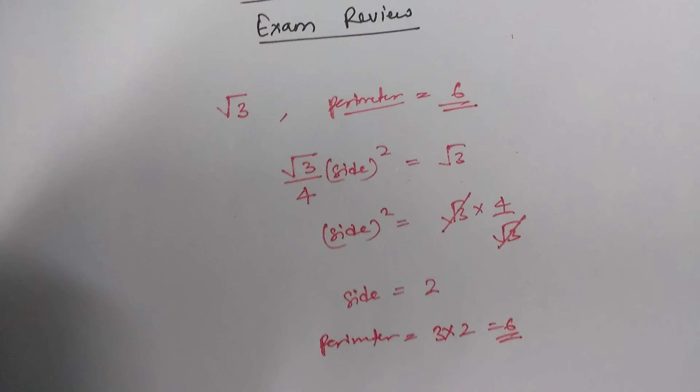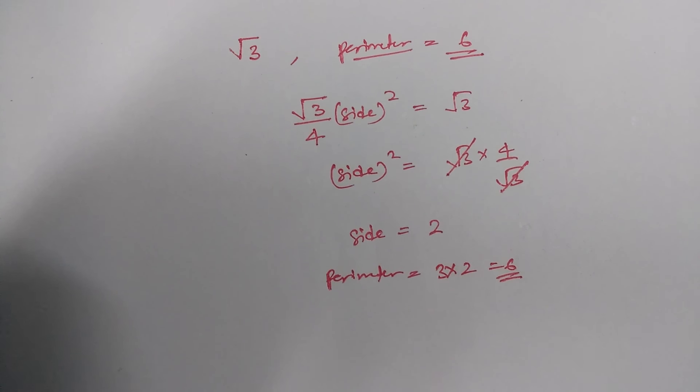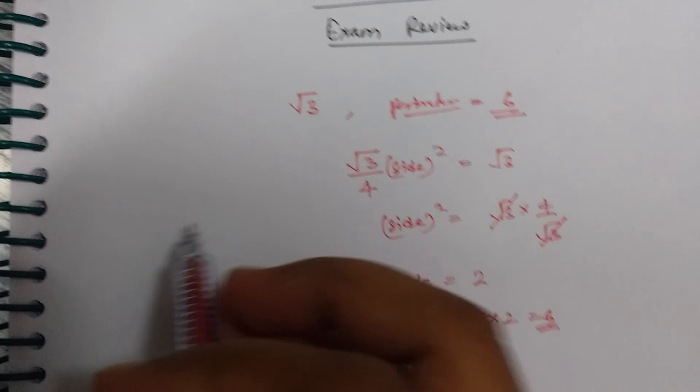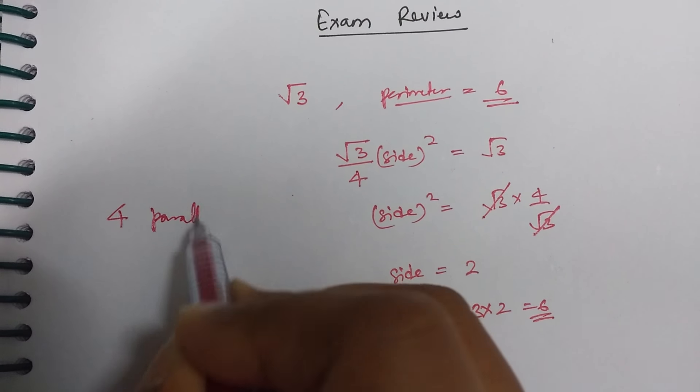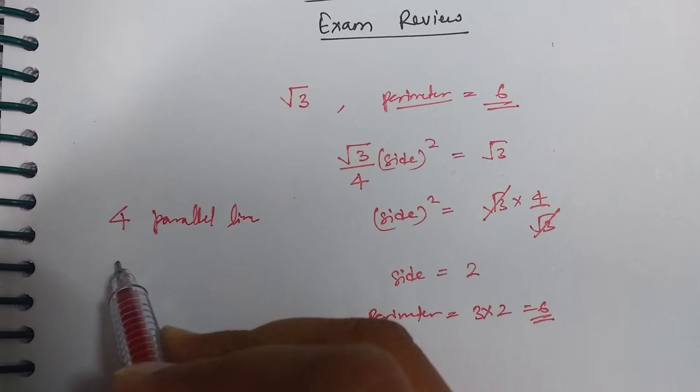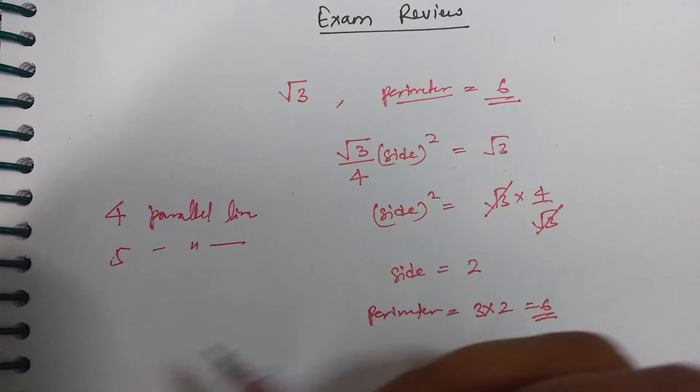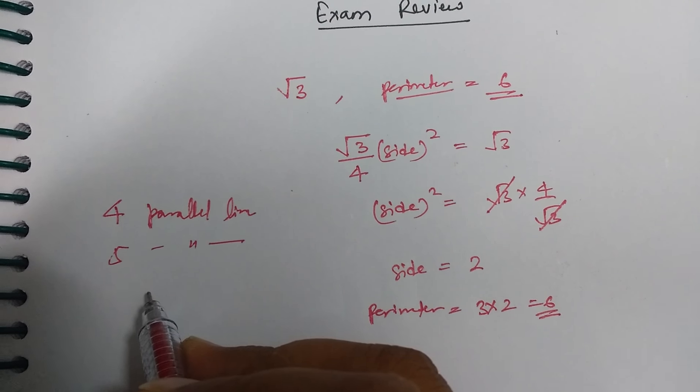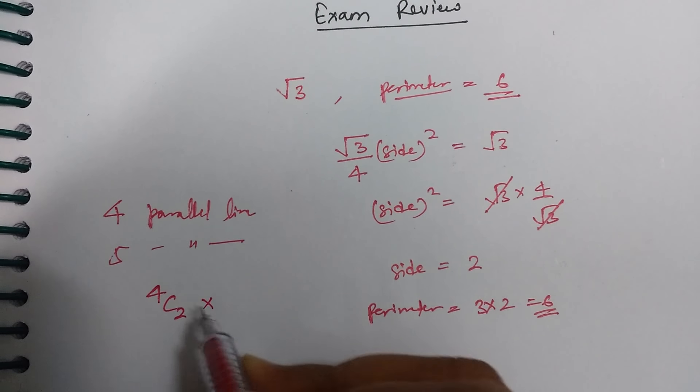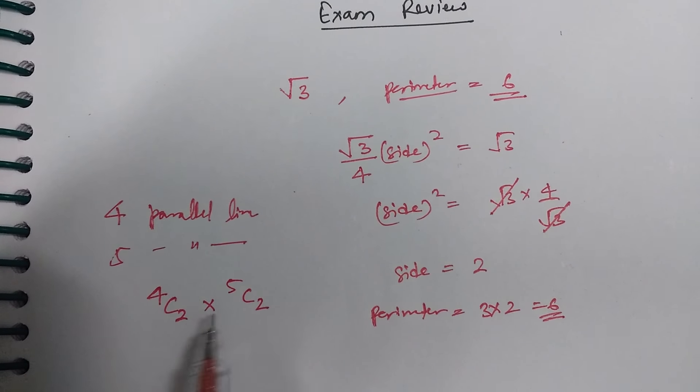Then again one question also came from aptitude part which I felt was very difficult. That was like it was given that you are having four parallel lines, okay, four parallel lines and five parallel lines, so after intersecting how many parallelograms you must have got. For that question you have to follow this equation, that 4C2 into 5C2, this basically from combination question.